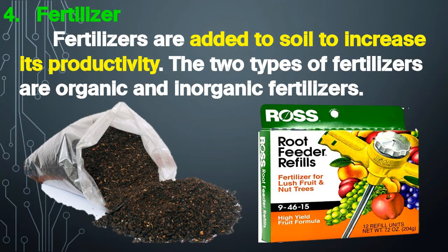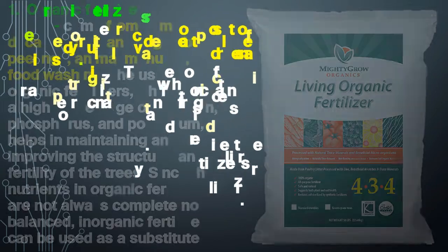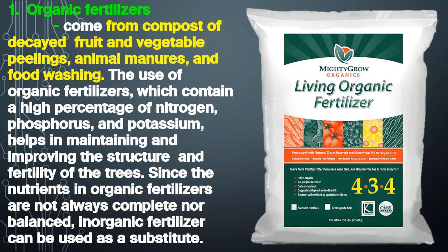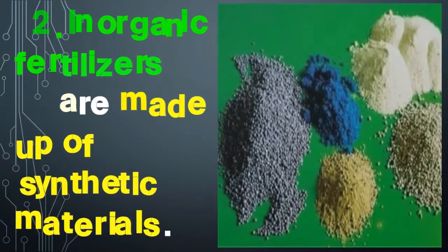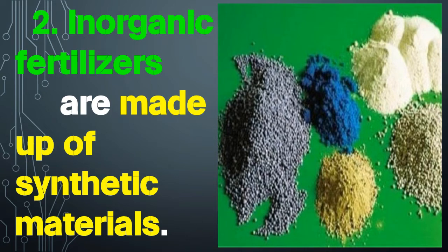4. Fertilizer. Fertilizers are added to soil to increase its productivity. The two types are organic and inorganic fertilizers. Organic fertilizers come from compost of decayed fruit and vegetable peelings, animal manures, and food washing. They contain a high percentage of nitrogen, phosphorus, and potassium, which helps maintain and improve soil structure and fertility. Since the nutrients in organic fertilizers are not always complete or balanced, inorganic fertilizer — made up of synthetic materials — can be used as a substitute.